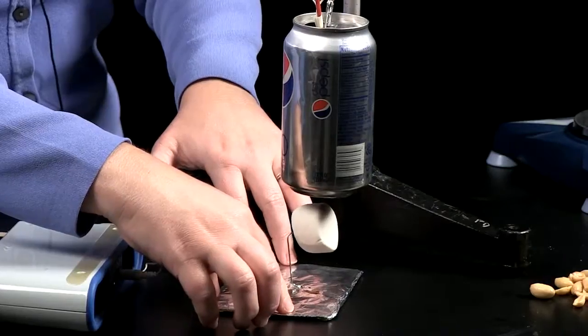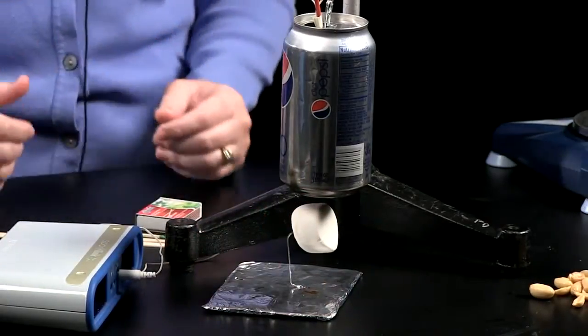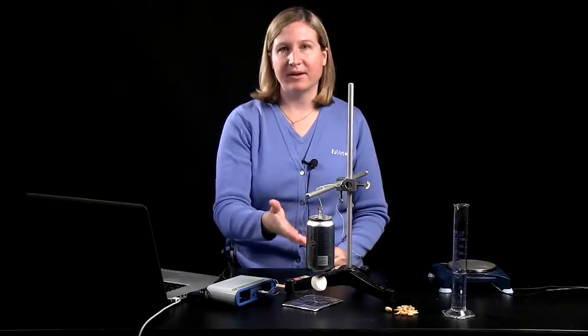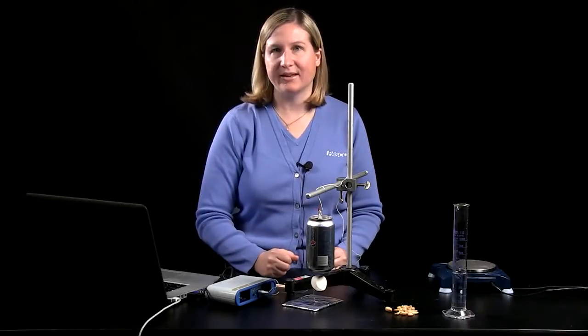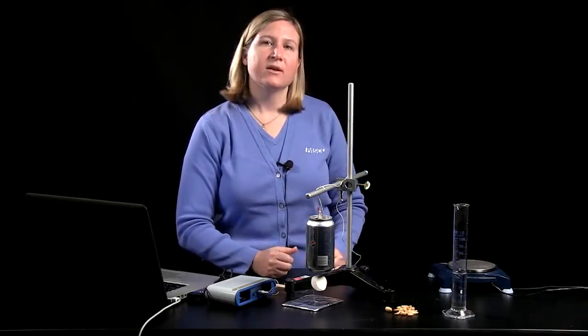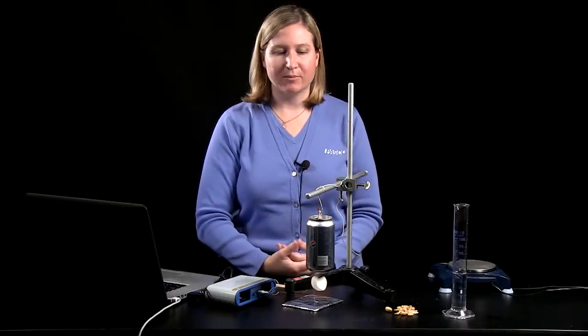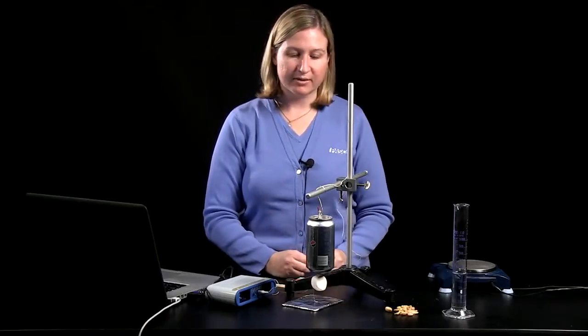I'm going to place the food holder with the food item directly below the can. We want to maximize the amount of energy that the water in the can gains from the food. There's going to be some energy transfer to the environment, but we want to minimize that as much as possible.